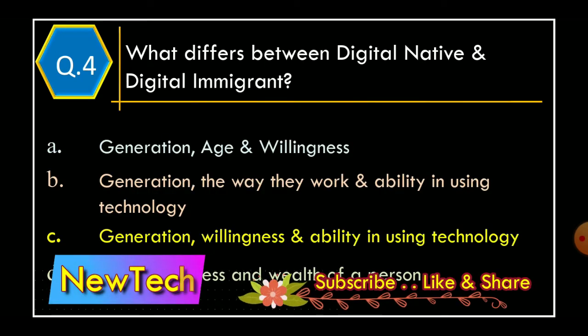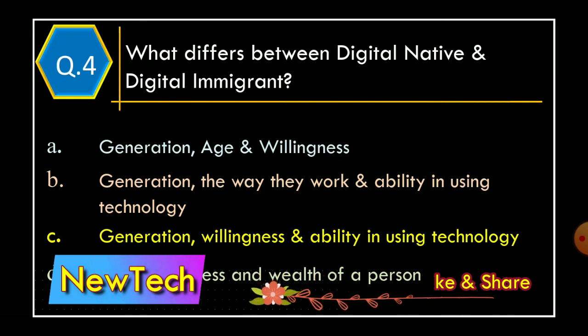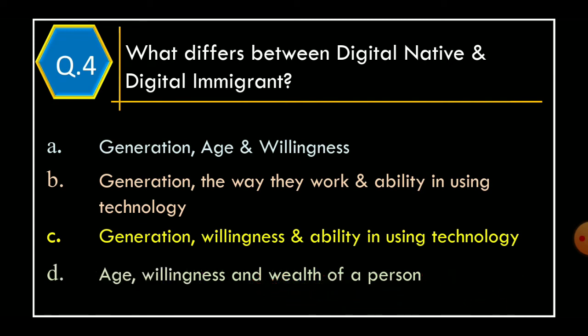Question 4: What differs between a digital native and a digital immigrant? Option A: Generation, age and willingness. Option B: Generation, the way they work and ability in using technology. Option C: Generation, willingness and ability in using technology.